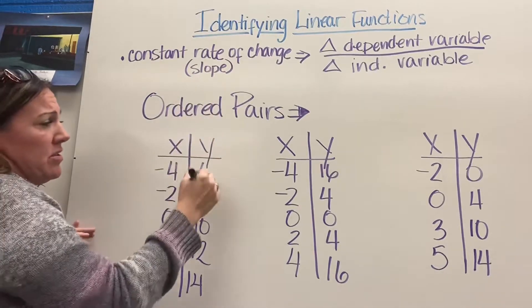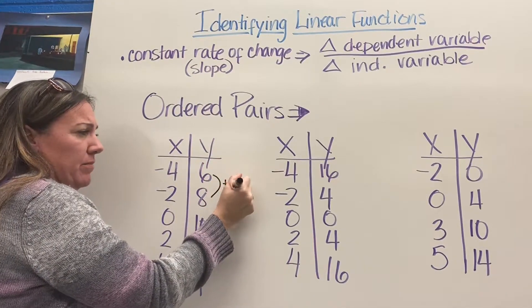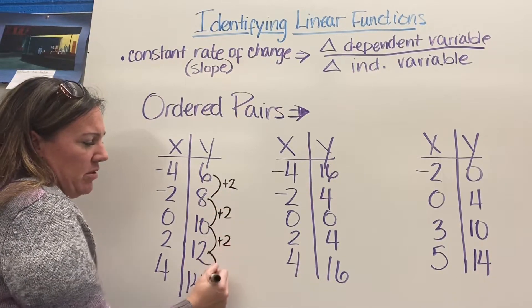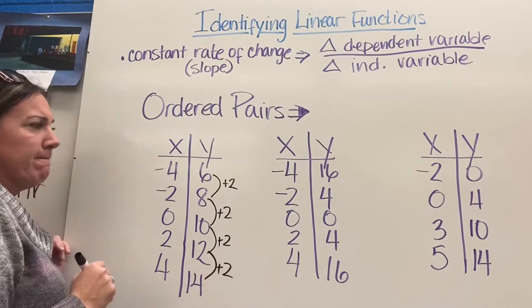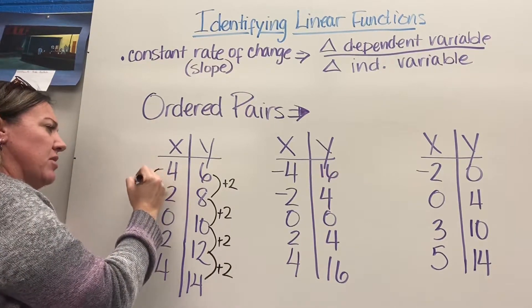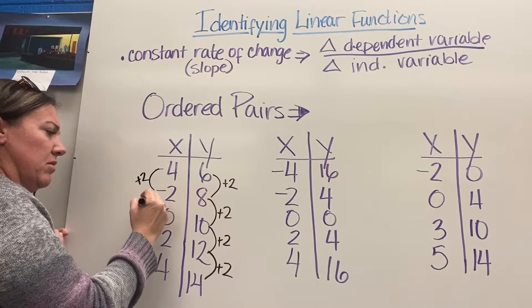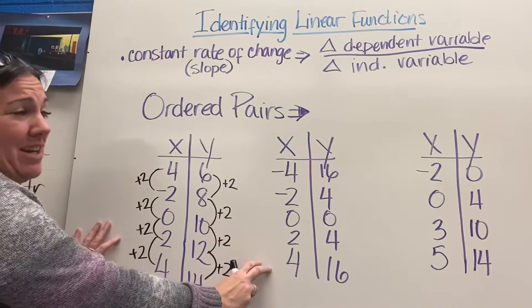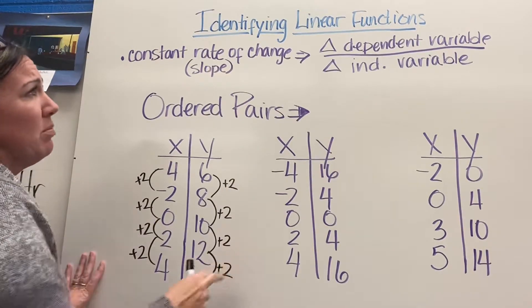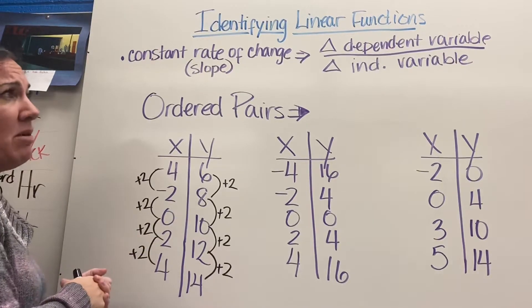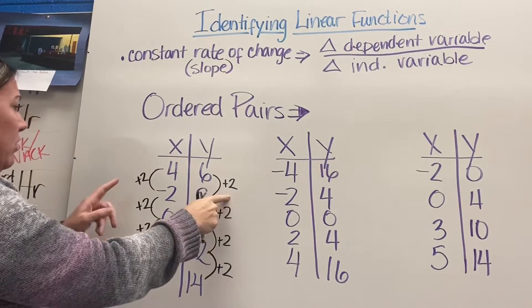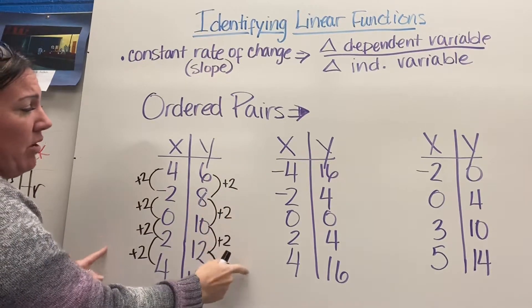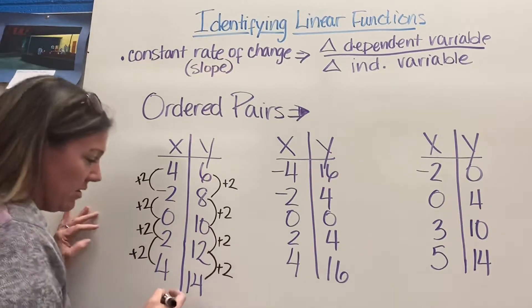If I look at my first one here, to go from 6 to 8, I'm going to add 2. To go from 8 to 10, I'm going to add 2. 10 to 12, plus 2, plus 2. If I look at my X values, they also go up by plus 2. I don't need these to change at the same rate themselves, but I do need it to be constant. The change of my dependent value is 2 over the change of my independent value, which is 2. Does that continue all the way through? It does. So this would be linear.